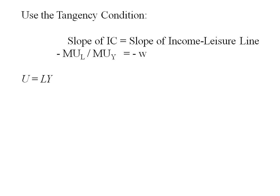Go back to my preferences. The marginal utility of leisure is Y, and the marginal utility of Y is leisure. Plugging in, we get Y over L equals W. Solving for Y, we get Y equals WL. This will be one of the equations that we use.